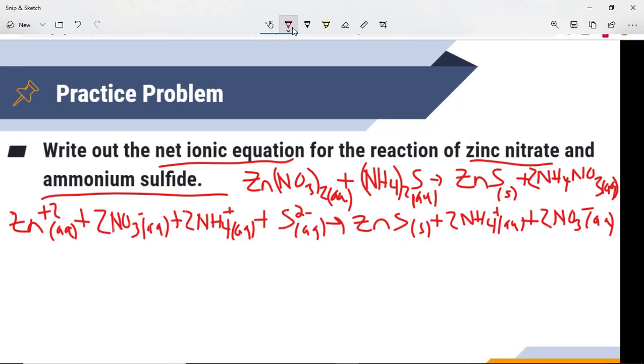Now what we do is we cancel out things that are similar on the left and right side. So 2NO3 cancel, 2NH4 cancel. And what I'm left with is my net ionic equation. I'm left with what has changed over the process of the reaction.